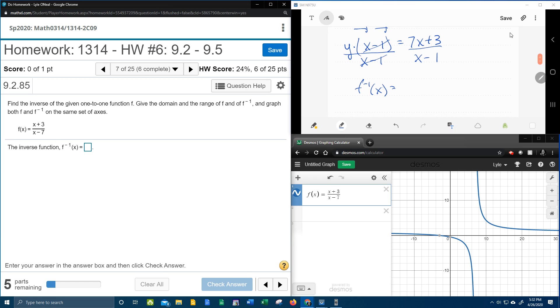And now we can say that we have the inverse function. Now that we have y by itself, this is now the inverse of f of x is 7x plus 3 divided by x minus 1, and that should be the inverse function.